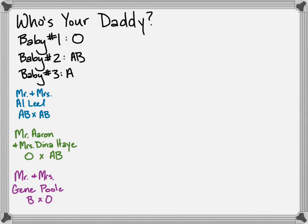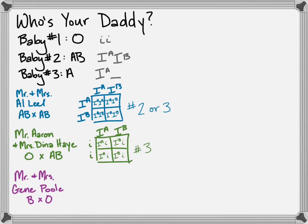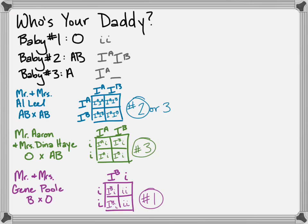Coming back — and that sequence I was telling you to go through is a hint. Some of you can probably look at this and just figure it out through reasoning, but I do want you to be able to work these Punnett squares for when problems get more difficult. So there are the baby genotypes, there's our parent cross for the Leels, and they could have baby two or three. Again with the Hays and the possible offspring — they can only have baby number three. So that leaves the Leels with baby number two. We know baby number one belongs with the Pools. The B type blood parent has to also have a recessive allele, and there's the allele we need to make it B blood — and you're left with baby number one.